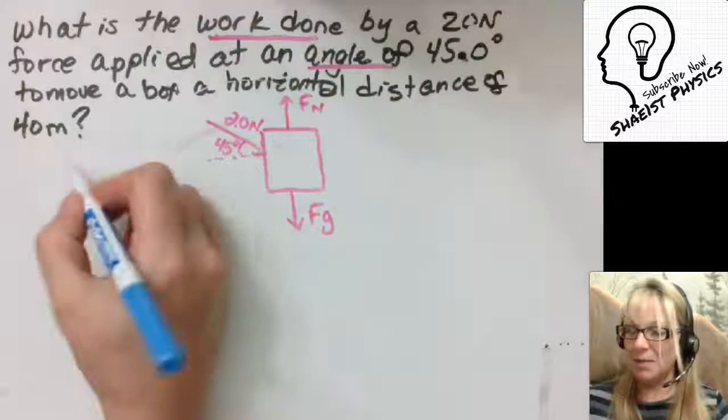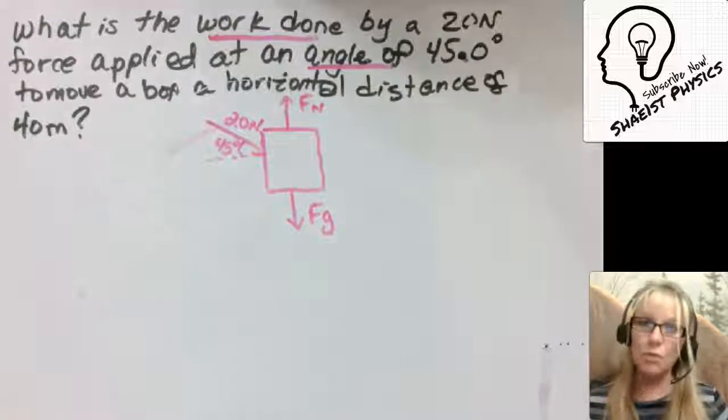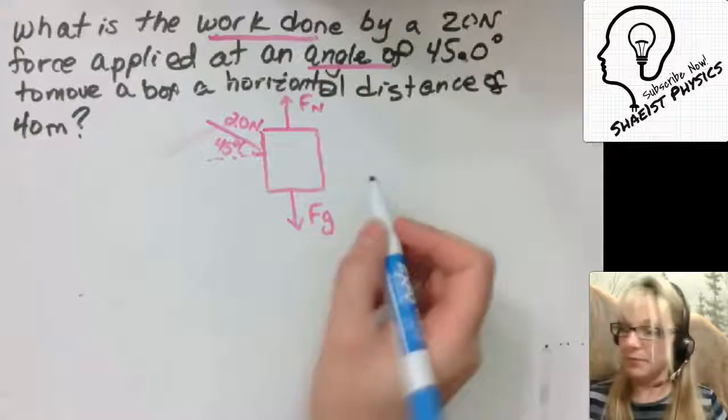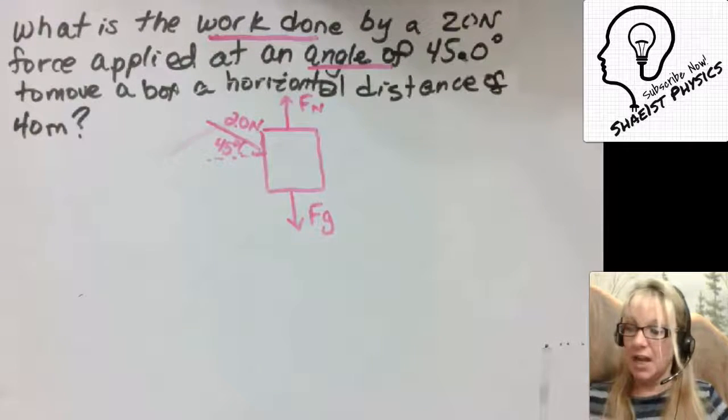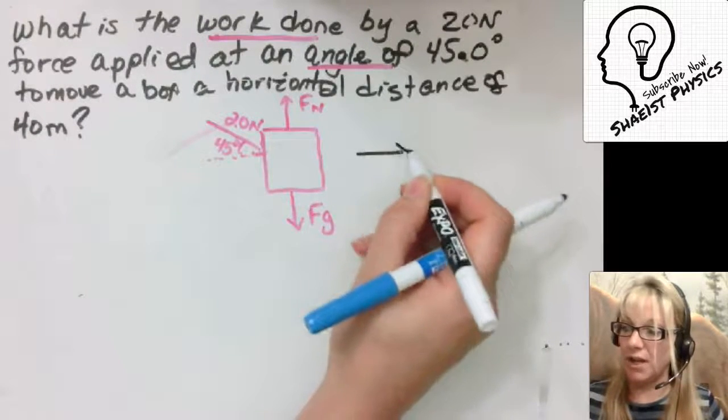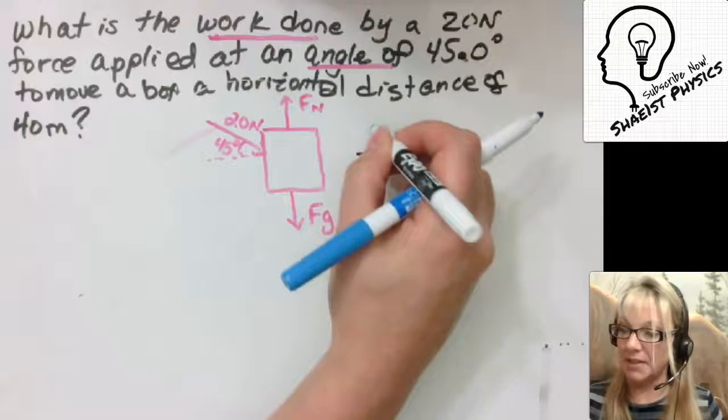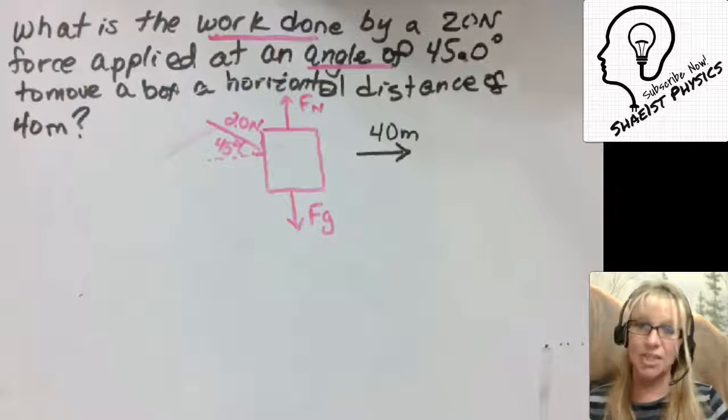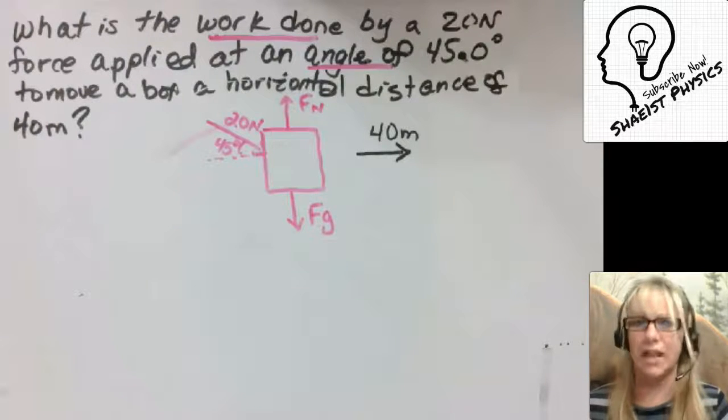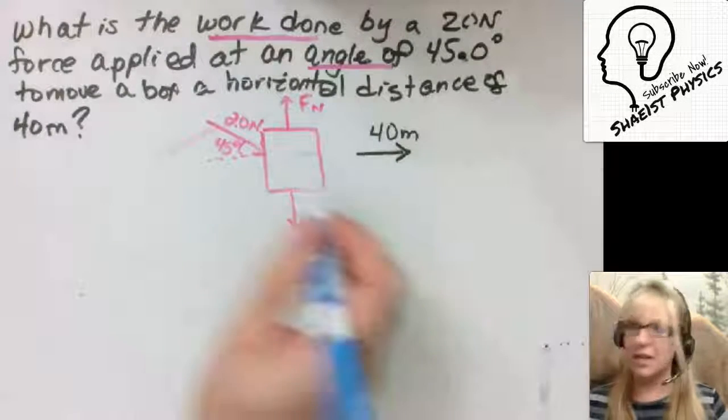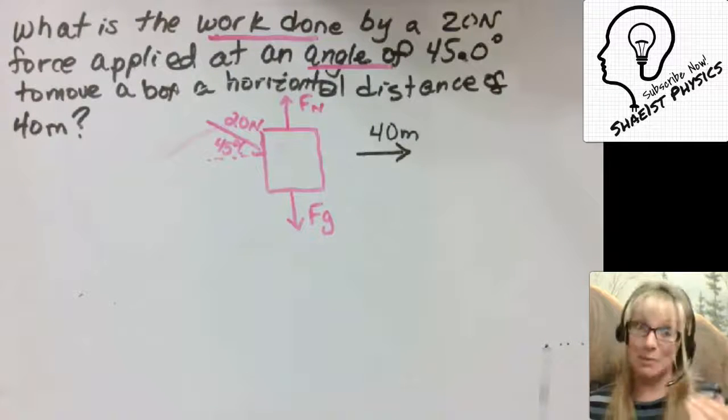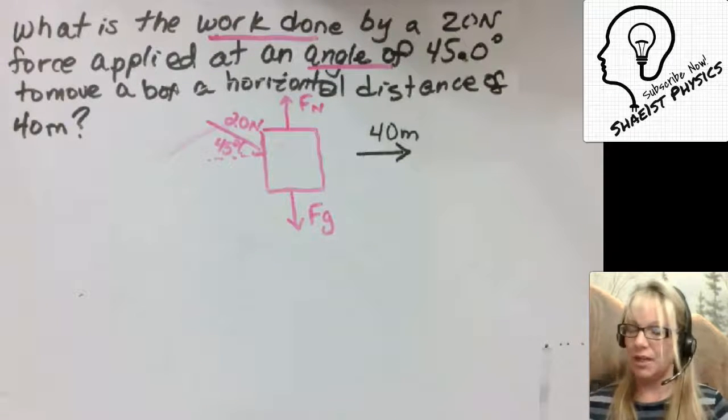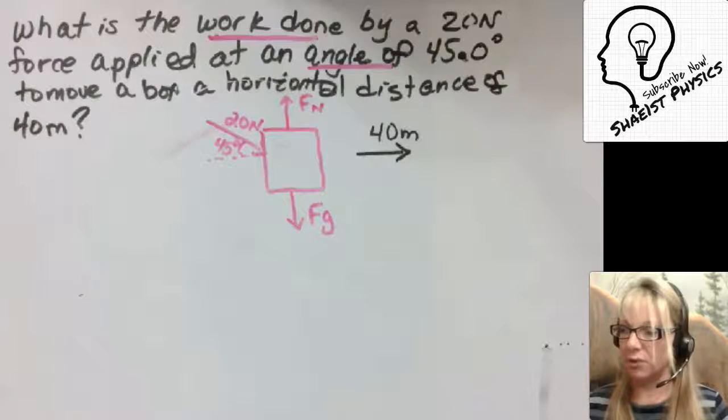And what I mean by that is normally when you go about a work problem, I want to also draw in my displacement. So my displacement is 40 meters. Whenever I do a sketch, if it's a displacement, acceleration, or velocity vector, I don't attach it to the box, it just helps me and my mind differentiate those vectors so I don't automatically think that it's a force.